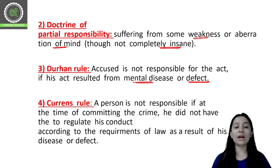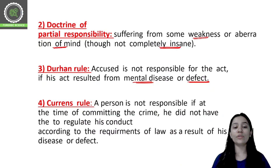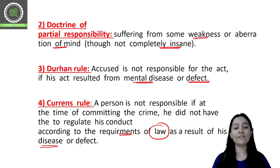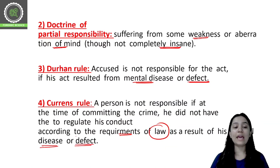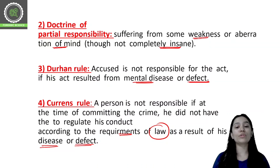Curren's rule states that a person is not responsible if, at the time they commit a crime, they did not have the capacity to regulate their conduct according to the requirements of law as a result of mental disease or defect. Because of that mental disease or defect, the law could not regulate them, and therefore that person will not be criminally responsible.